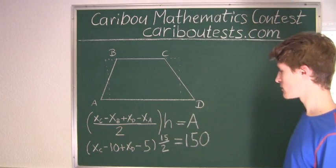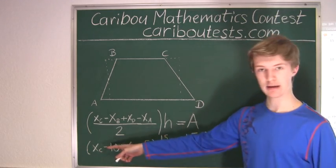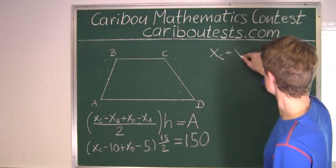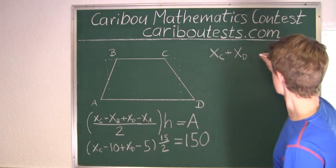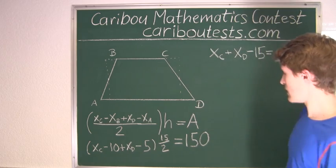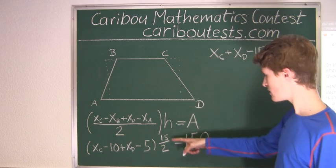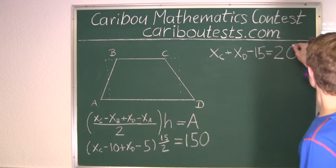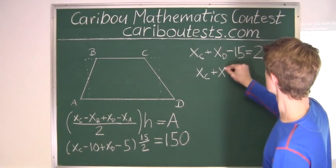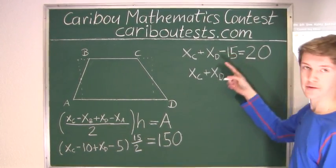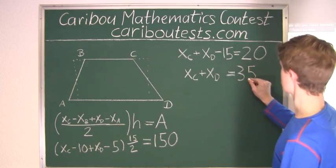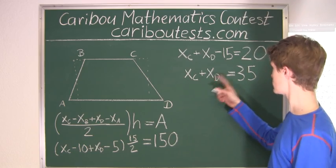Okay, now we have xC plus xD, and this is minus 15. So now we have xC plus xD, and bringing the negative 15 on the other side is plus 15, so 20 plus 15 is 35. So the x-coordinate of point C plus the x-coordinate of point D must equal 35.